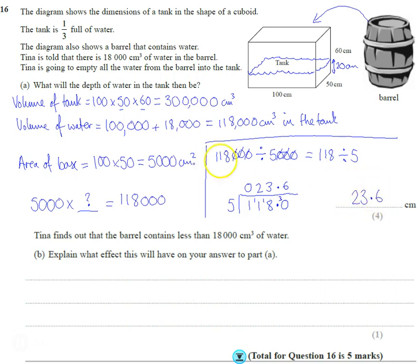So that means the height is going to be 23.6 centimeters high. Really quite tricky. Let's think about this one. Second bit as a follow-up: Tina finds out the barrel contains less than 18,000 centimeters cubed of water. When we put this in we're adding on not 18,000 but something smaller, so that means this water is going to go down. Explain what effect this will have on your answer to part a.